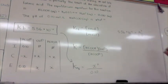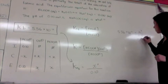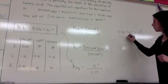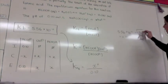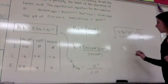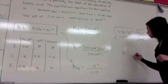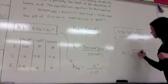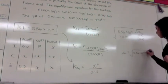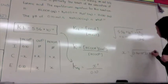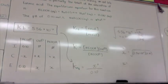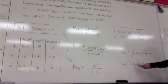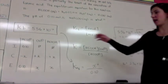To get x by itself, we multiply both sides by 0.10, then take the square root of both sides. So x equals the square root of (5.56 × 10⁻¹¹ × 0.10). Solving for x gives 2.36 × 10⁻⁶, which we use as our hydroxide ion concentration.